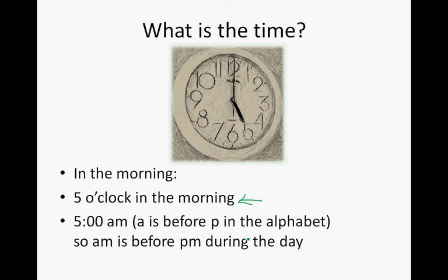Or we can say 5 AM. Remember A is before P in the alphabet, so A is before P during the day. So 5 AM is 5 o'clock in the morning. Or we can say 0500. Right, so that is the three ways we can say what the time is on this clock.